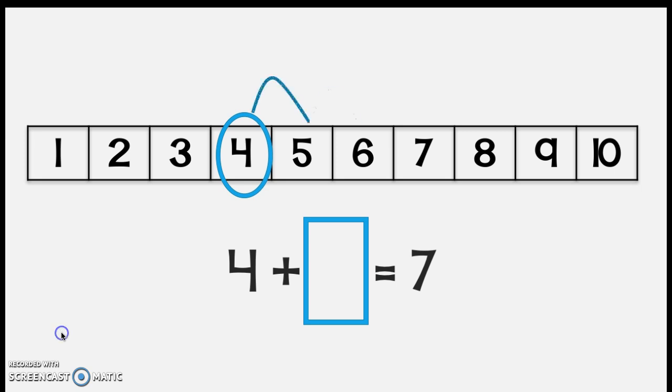Four, five, six, seven. Then I get to stop because I reached it. Now all I have to do is count how many jumps I made. One, two, three. Oh perfect. That means my unknown is 3.